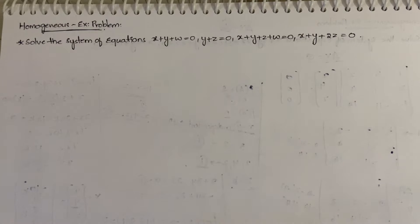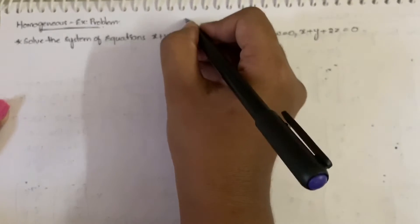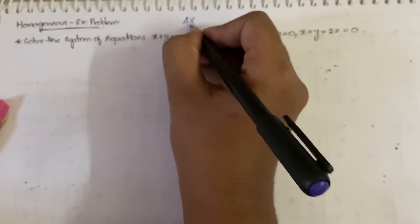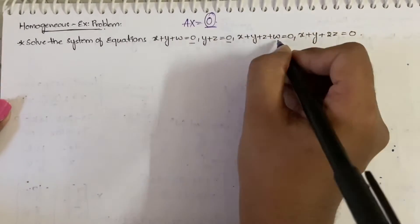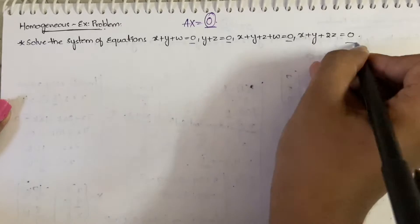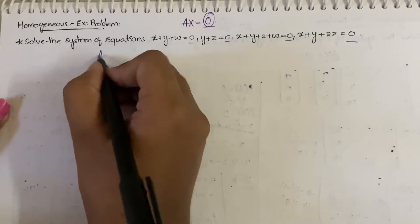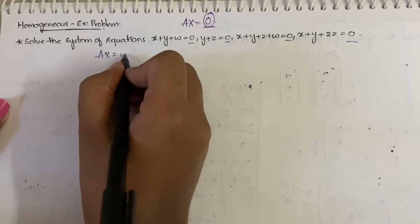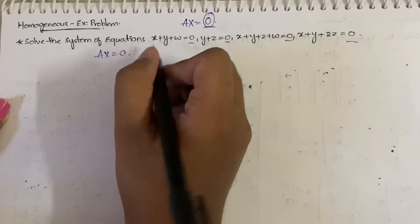Homogeneous problems are simpler compared to non-homogeneous, so don't worry. Homogeneous means the system will be in the form Ax = 0, meaning all zeros on the right-hand side — no constants. So let us write Ax = 0. Here, A is the coefficient matrix.